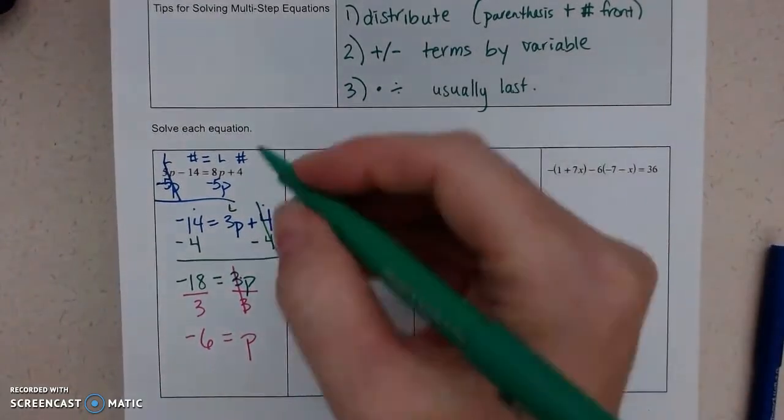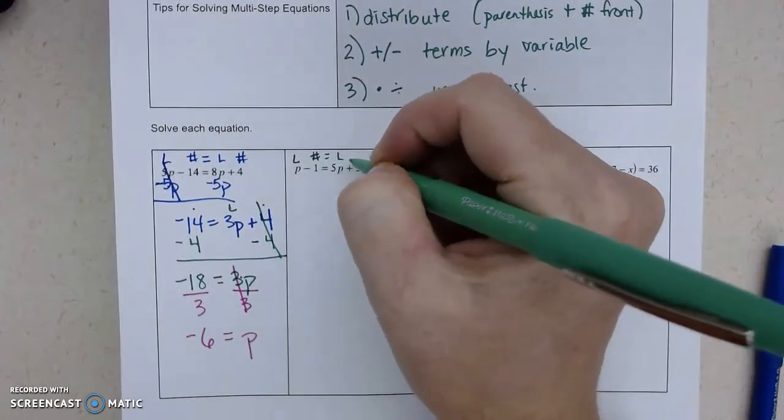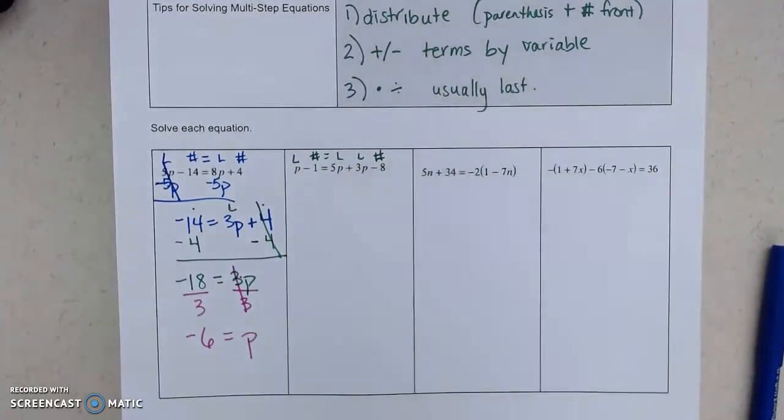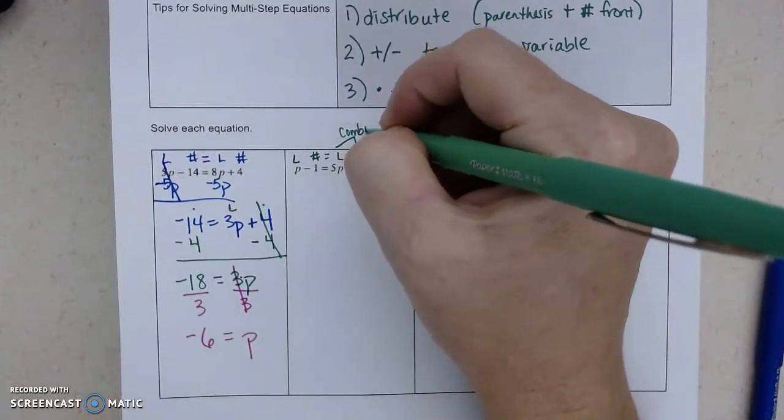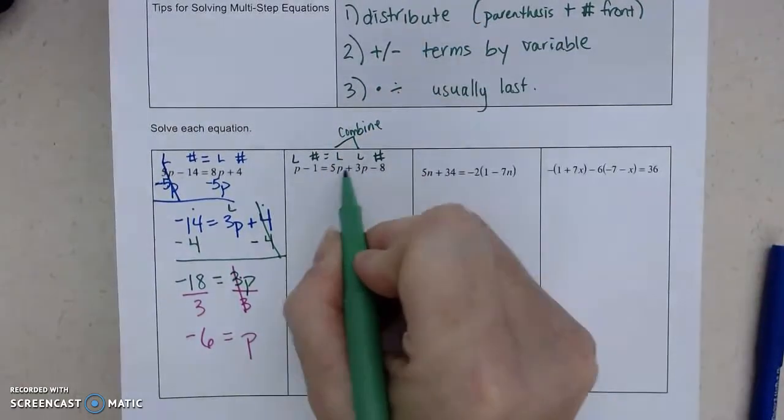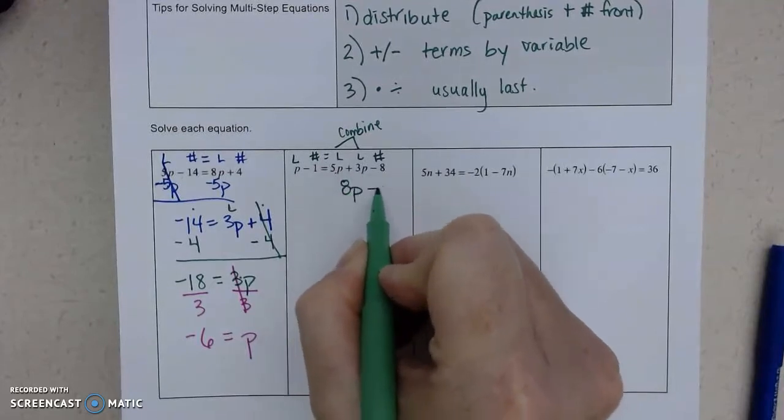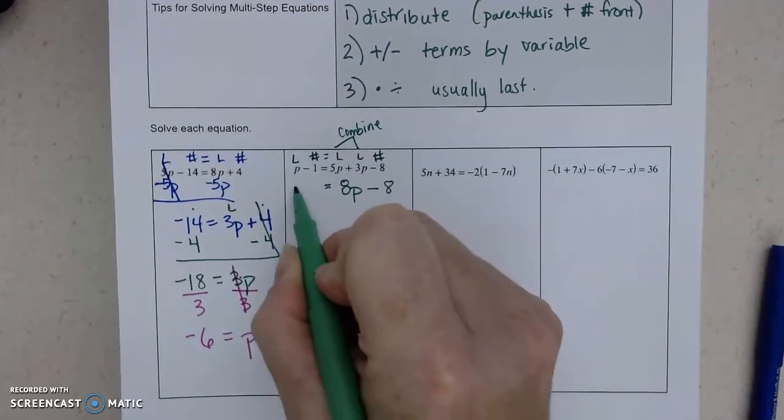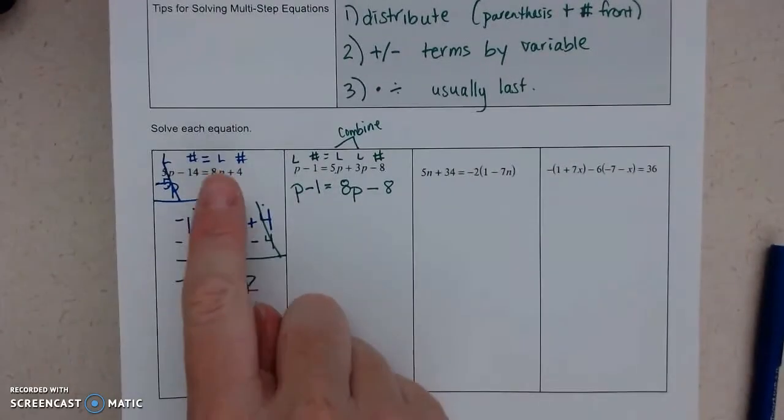All right, let's look at our second equation. I have a letter, a number, a letter, a letter, and a number. So this one, I want to combine these first. So you don't do the opposite, you do whatever they say. So 5P plus 3P is 8P. And then this problem turns into our first problem.